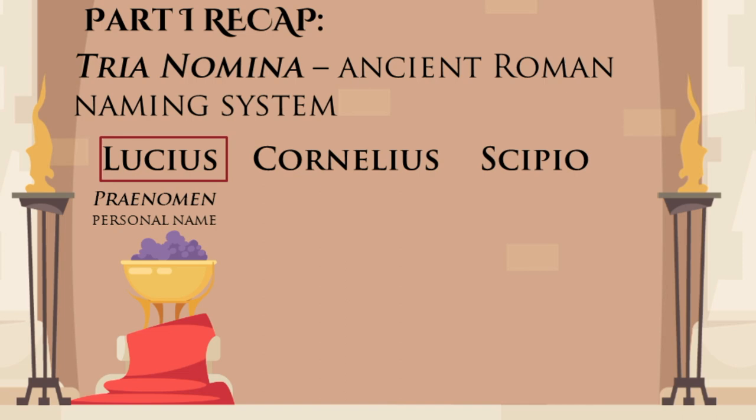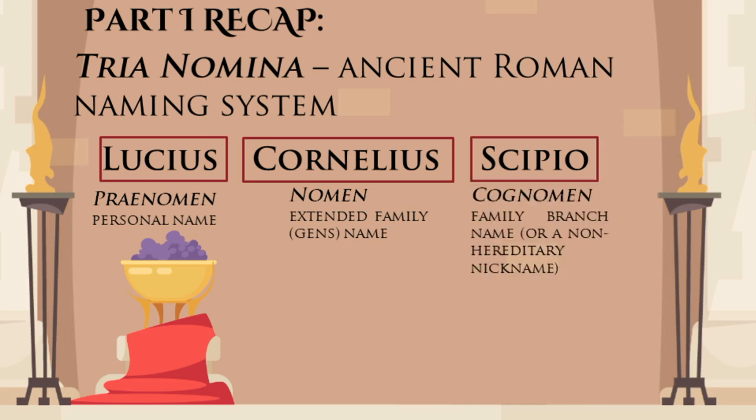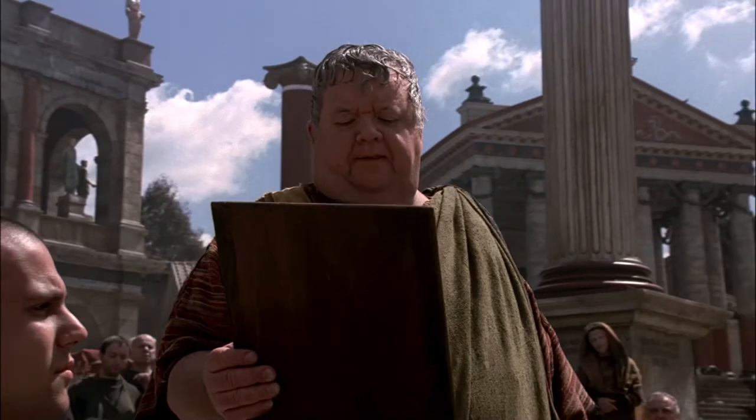The personal name, or praenomen; the main family name, or nomen; and the family branch name, aka cognomen. This second video will continue where we left off and cover the developments in Roman naming customs from the late Republican period to the height of the empire in the second century AD. It was a time of great change in Roman society, and the naming customs were no exception.